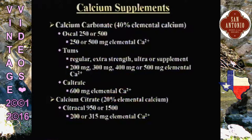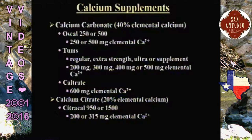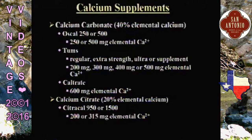Calcium carbonate is 40% elemental calcium. Nowadays they put the milligrams of elemental calcium on the bottle. Tums is a great way of getting calcium — available in regular, extra, and ultra strengths, and in the vitamin section you can get a large Tums with 500 milligrams each. What's the difference between carbonate and citrate? Probably nothing, though citrate may be slightly better absorbed in patients who are achlorhydric. They're essentially the same.